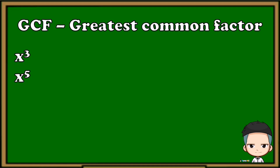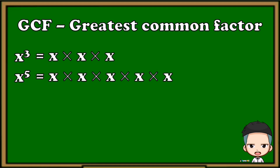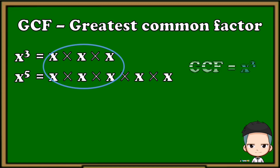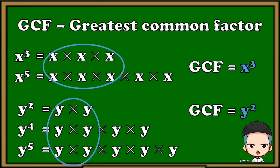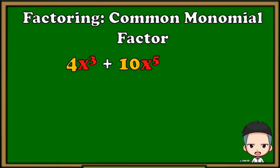Now let's try to find the greatest common factor of these variables. First we need to put them in their expanded form. By observation we can easily identify the common factors. They are common with x times x times x times x — in exponent form that is x cubed. So the greatest common factor is x cubed. Another example: y squared, y raised to 4, and y raised to 5. Put them in their expanded form. We can see they are all common with y times y, meaning the greatest common factor is y squared.